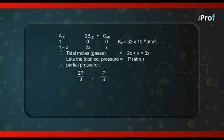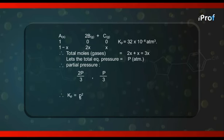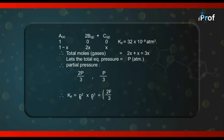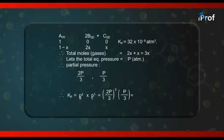Therefore, Kp will be equal to, as usual, partial pressure of B raised to power 2 into partial pressure of C raised to power 1. So, that is 2P by 3 whole square into P by 3 and that is equal to 4P cube upon 27.